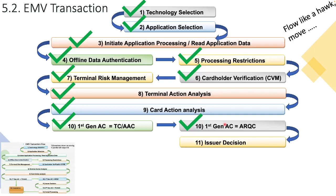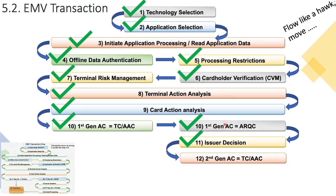The approval decision is transmitted back to the terminal on an ISO 8583 response message. The terminal then kicks off the Second GEN AC phase of the transaction. Instead of performing full Terminal Risk Management again, it looks at field 39 — the response code or issuer decision — and formulates its request to the card based on this. Since the issuer host said 'approve the transaction,' the terminal simply tells the card: please generate the TC, please approve the transaction.